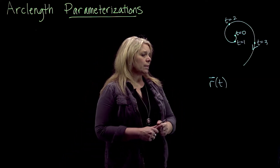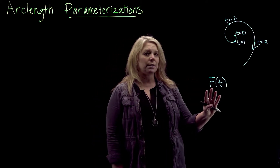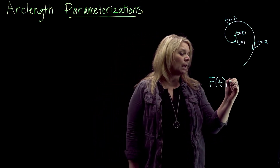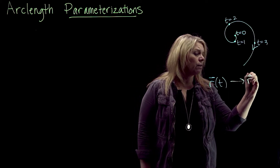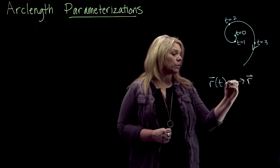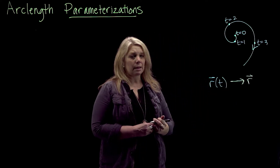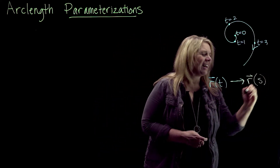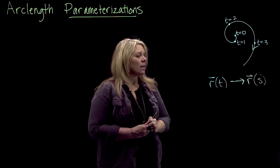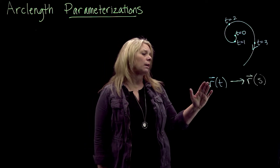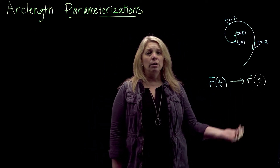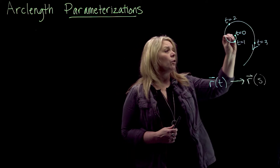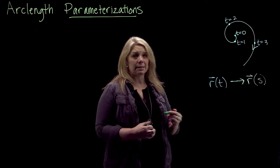When I do an arc length parameterization, I'm going to start with a parameterization R of T that generates this curve, and then calculate what's called an arc length parameterization to get a new parameterization for the curve — but parameterized in terms of arc length. We use a standard letter for arc length, which is S. Any time you see formulas later in the chapter written in terms of S, you should know that's an arc length parameterization.